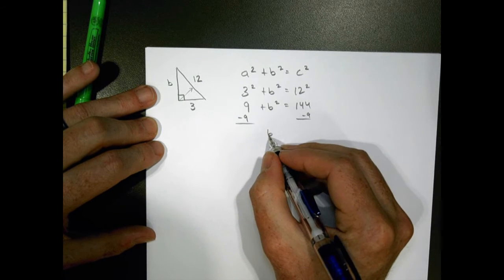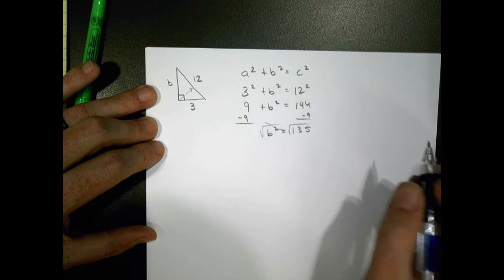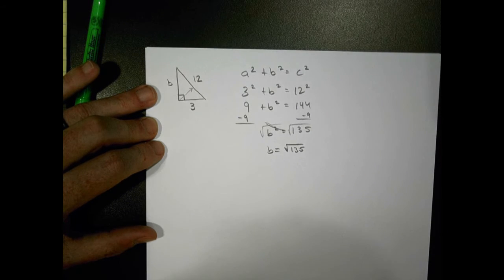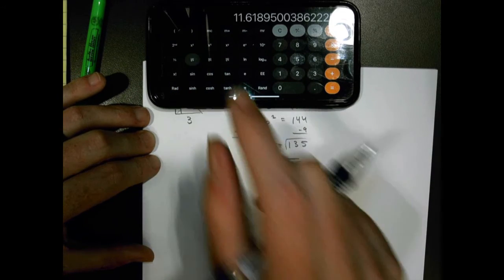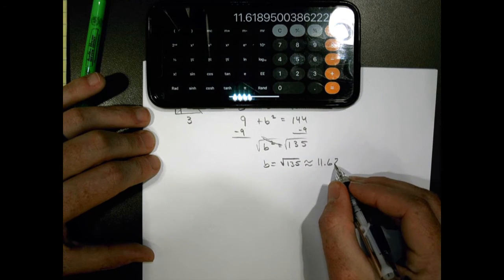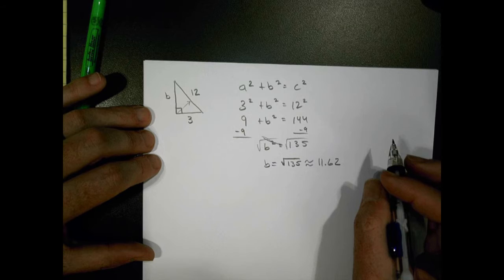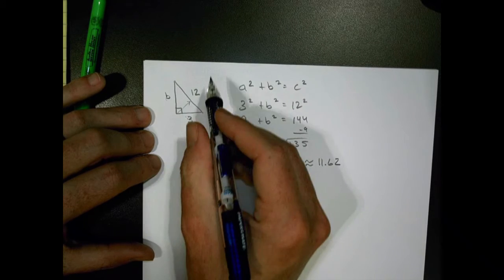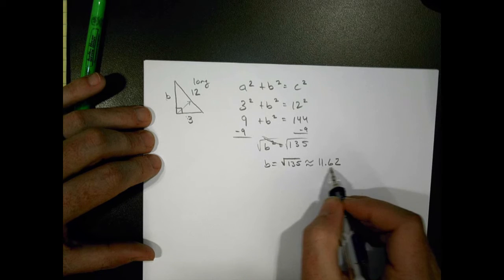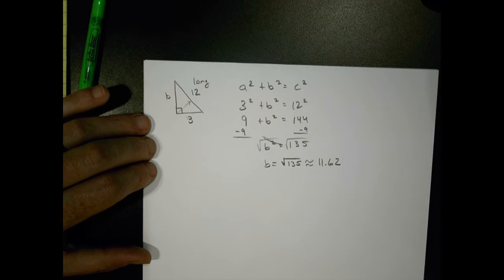We subtract nine from both sides to get b squared equals 135. Taking the square root of both sides, b equals the square root of 135. Using a calculator, that's about 11.62. Think about it: the two legs must always be shorter than the hypotenuse, which is 12. So your answer has to be less than 12 to be correct. If you get an answer greater than 12, you did something wrong.